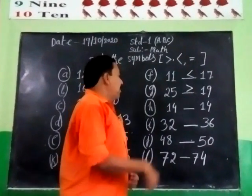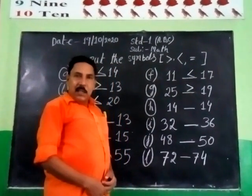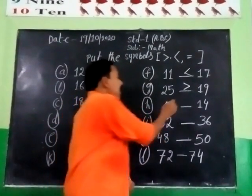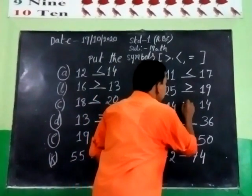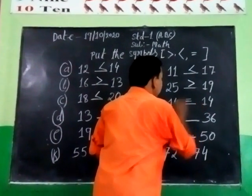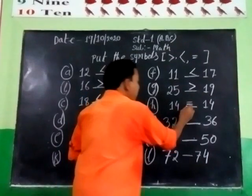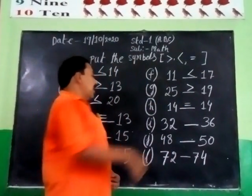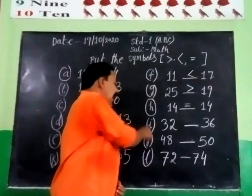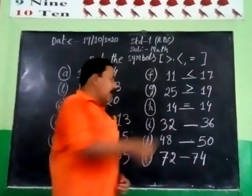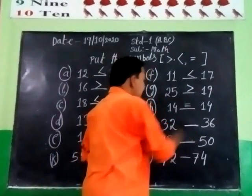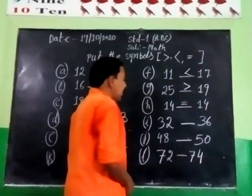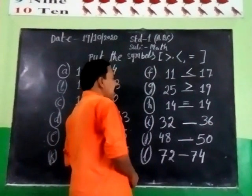Number 8: 14 and 14. The sign is less. Number 8: 32 and 36. 32 is less than 36. The sign is less.